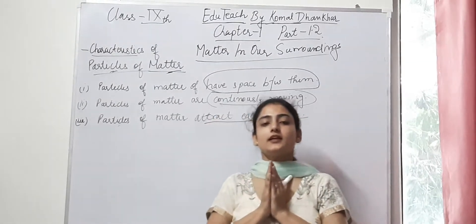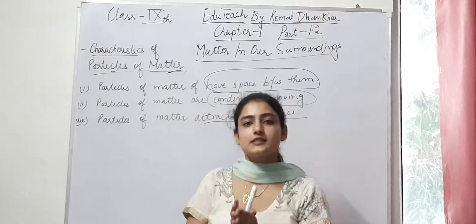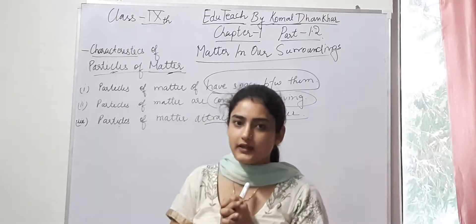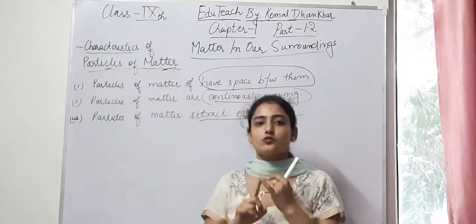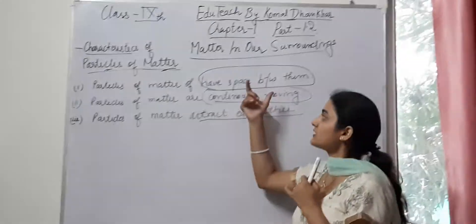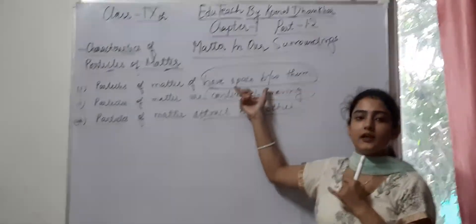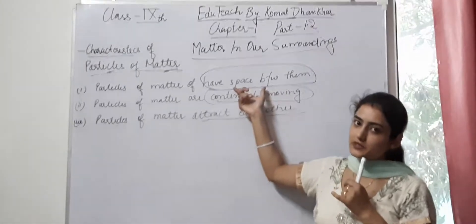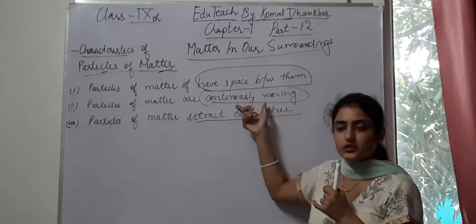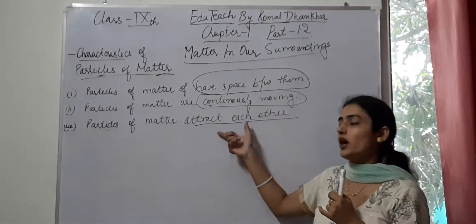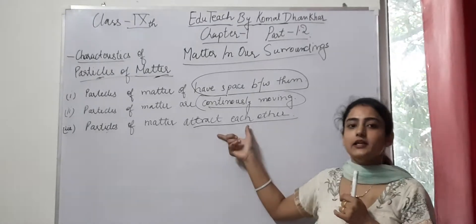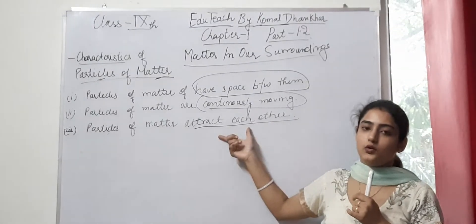So, what are the characteristics of particles of matter? Particles of matter have space between them. They move continuously, and they attract each other. These are the three key characteristics you need to understand.